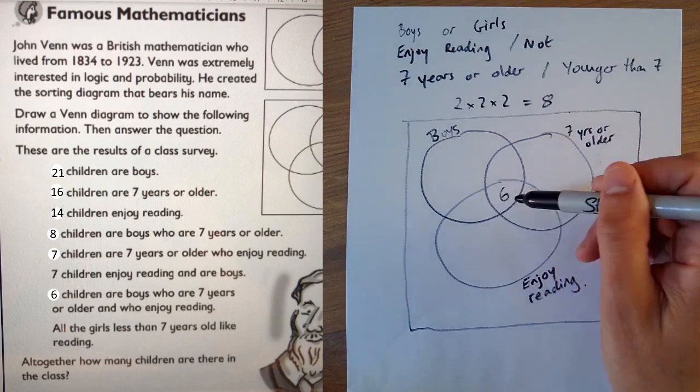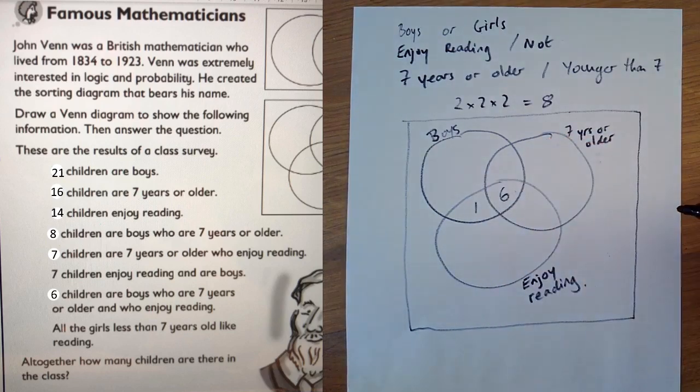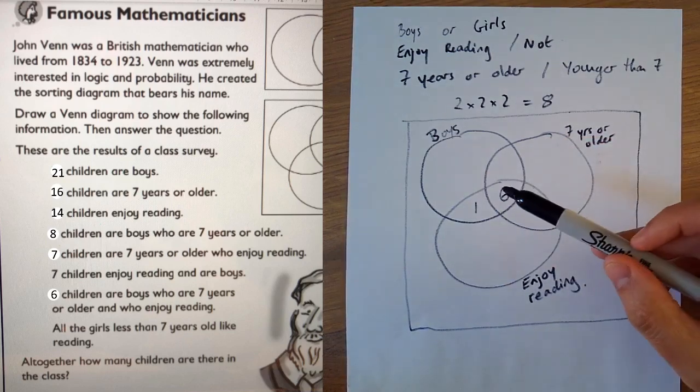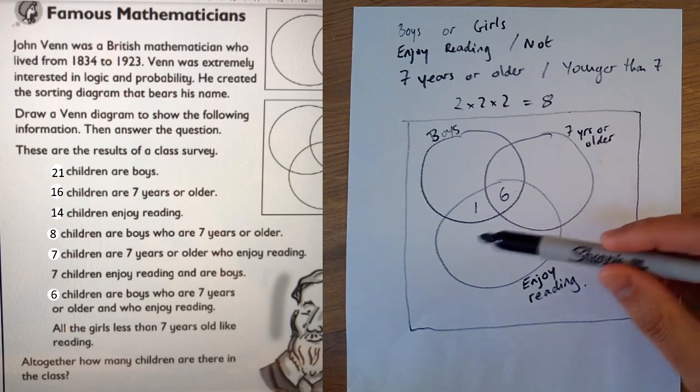So this number is actually seven minus six. It's one. That is the most crucial bit of Venn diagrams. And that's where most people tend to go wrong.